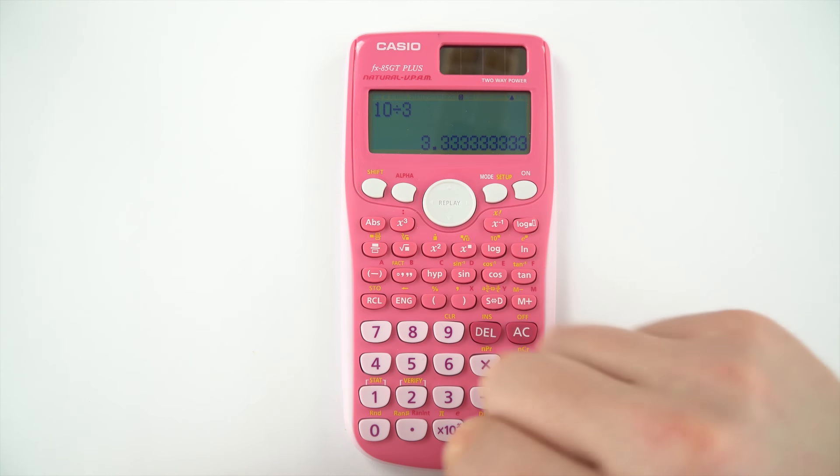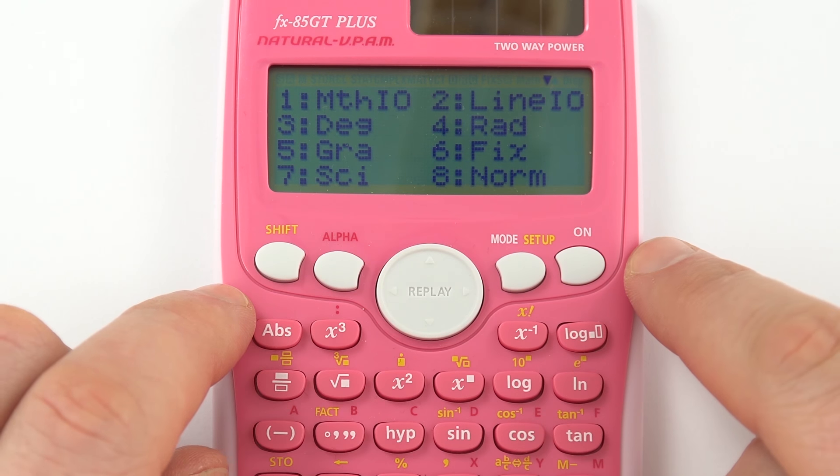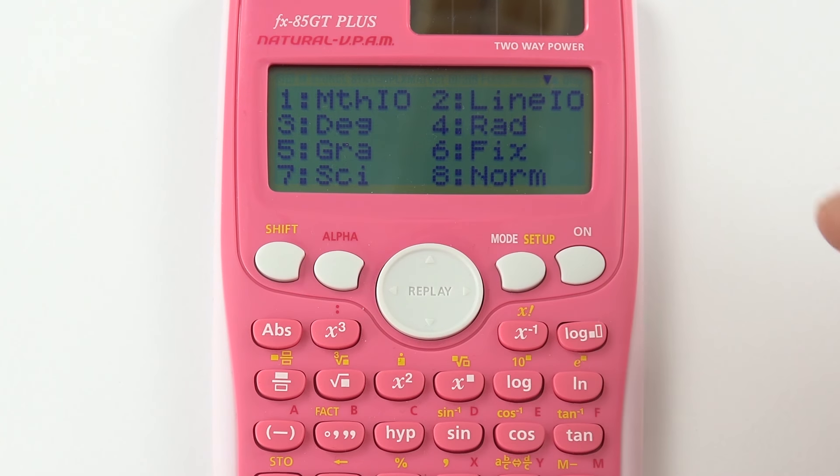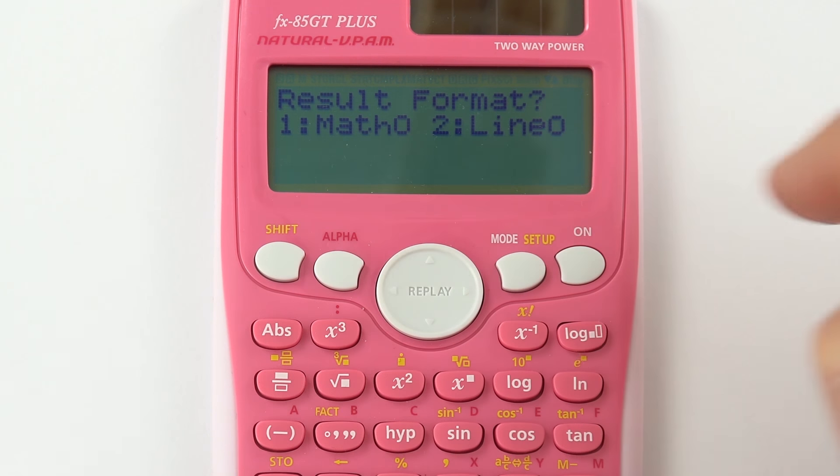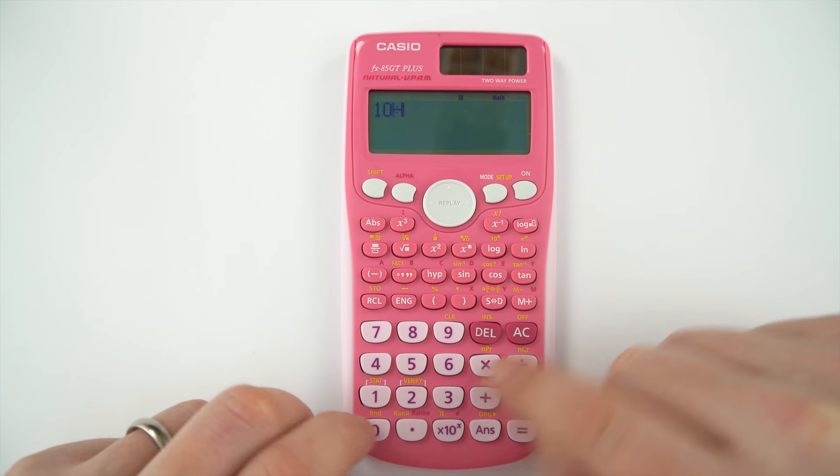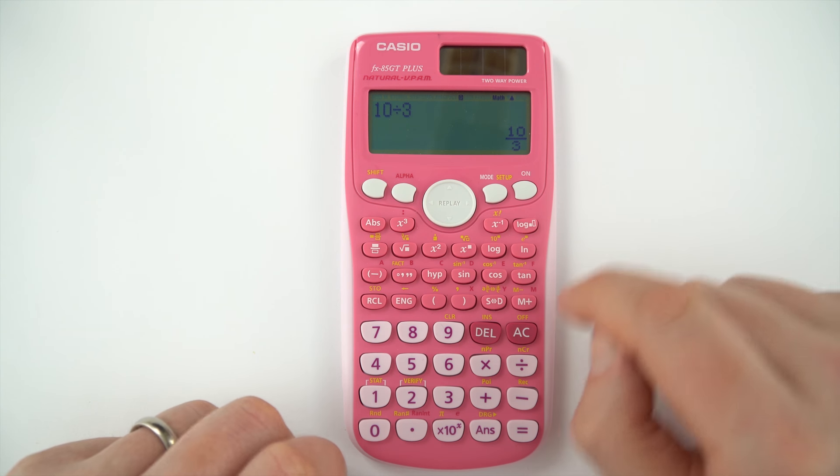If however you do like fractions, you can change it back. We go to setup once again, and now we've pressed number 1 to get into the math mode. Press 1 again, and then we can see that this has gone back to displaying our answer as a fraction.